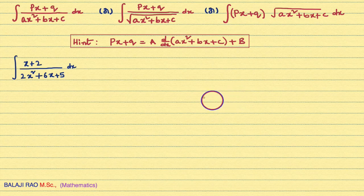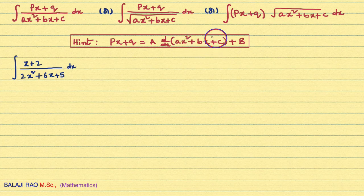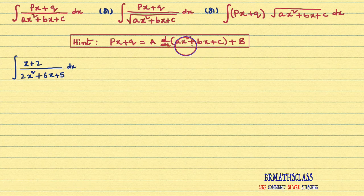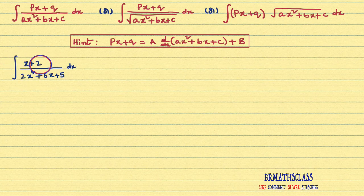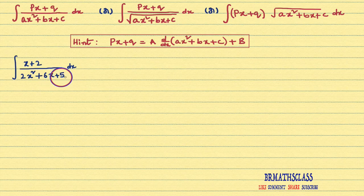What is that procedure? Initially, we will write px+q as a into d/dx of (ax²+bx+c) plus b and we proceed. First, try to identify which form this integral is. You observe in the numerator — the numerator is in the form of px+q, that is (x+2). The denominator is in the form of ax²+bx+c. So this integral is of this form.